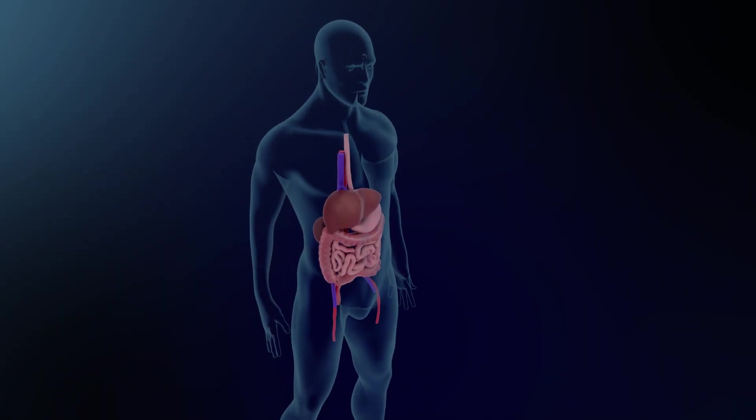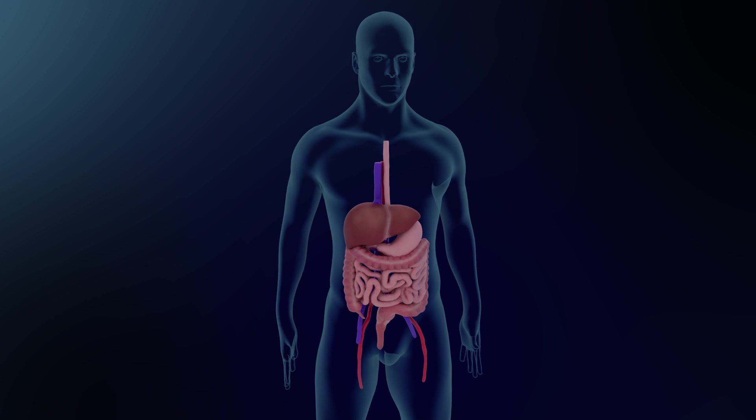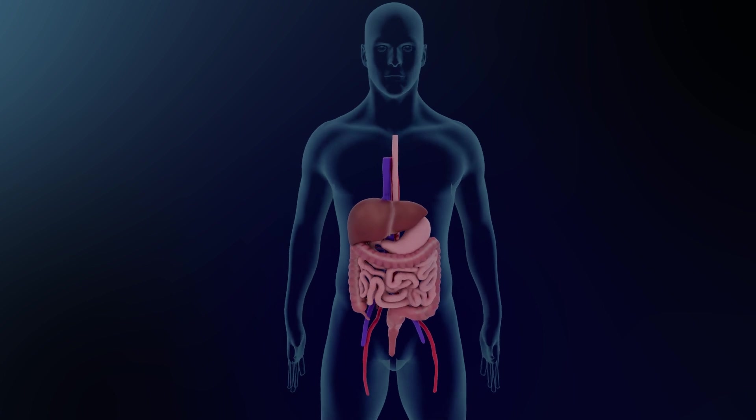Drug metabolism can occur in several sites in the body, including the intestinal wall, plasma, and the liver, with the purpose to alter the chemical structure of a substance so it can be excreted from the body more easily.